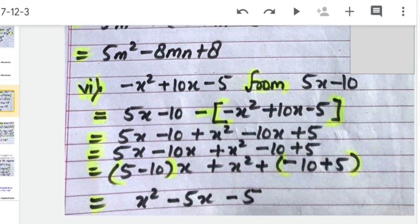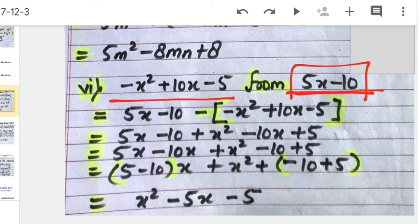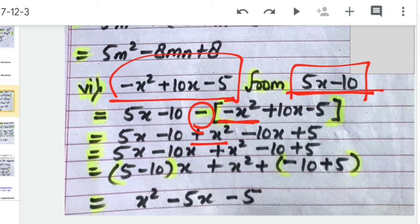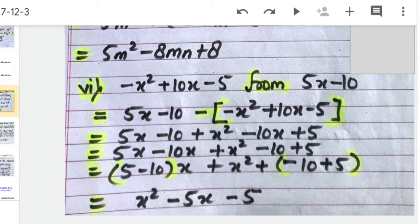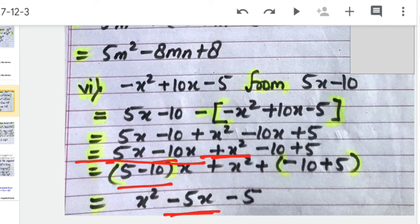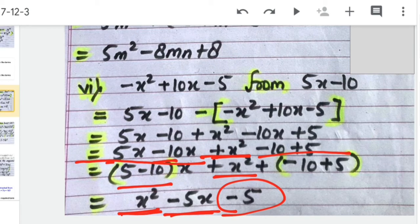The next part: write the first expression, then negative sign, then the second expression in brackets. Opening the bracket changes all signs inside: negative x² becomes positive x², positive 10x becomes negative 10x, negative 5 becomes positive 5. Collecting like terms: 5x minus 10x gives minus 5x; we have positive x²; and the constants negative 10 plus 5 give minus 5. So the answer is x² minus 5x minus 5.